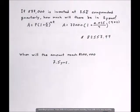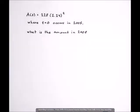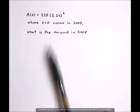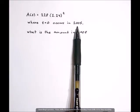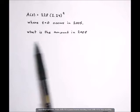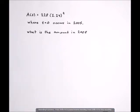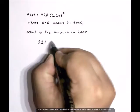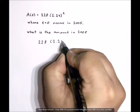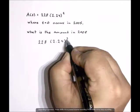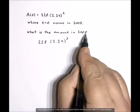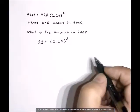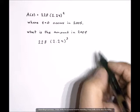So let's try another type of problem that you're going to run into, a problem where you're given the formula. In this case, we're given this formula A(t) = 238(2.24)^t where t equals 0 occurs in 2005, and we want the amount in 2008. All we're going to do is plug in the formula. 3 is the number of years between 2005 and 2008. Plug that into the calculator and get our answer.